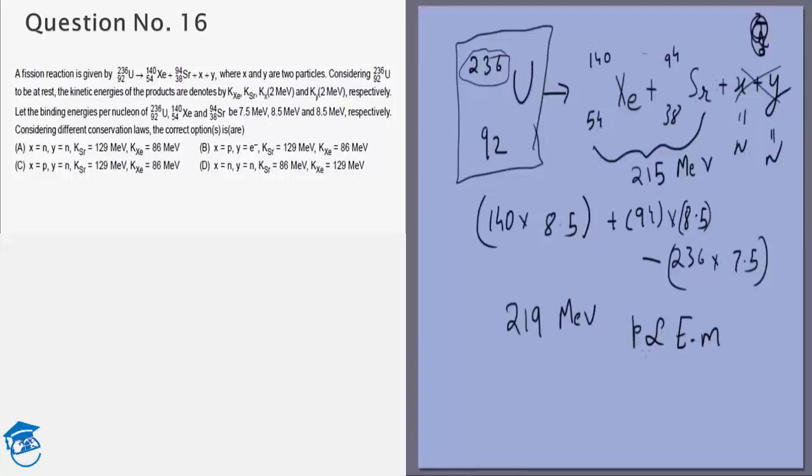If momentum is equal, that means the one with the lower mass has the higher energy. So in this case, Sr will have the higher energy. P squared by 2m—if P is the same, then if m is lower, then energy is higher. So Sr will have the energy 129 and Xe will have the energy 86.